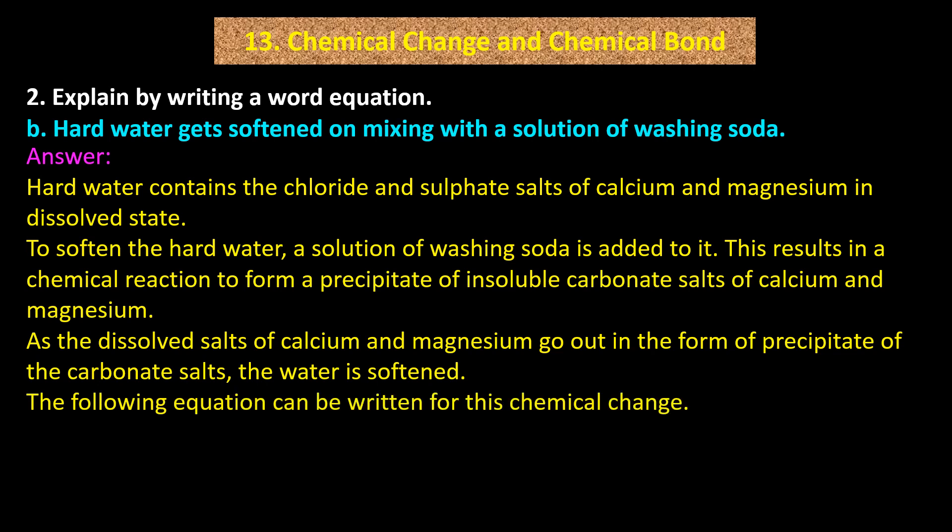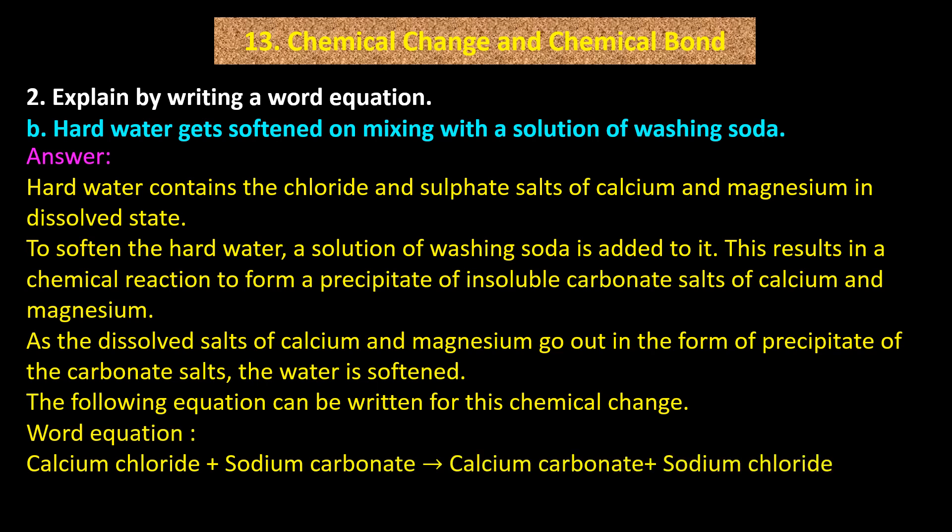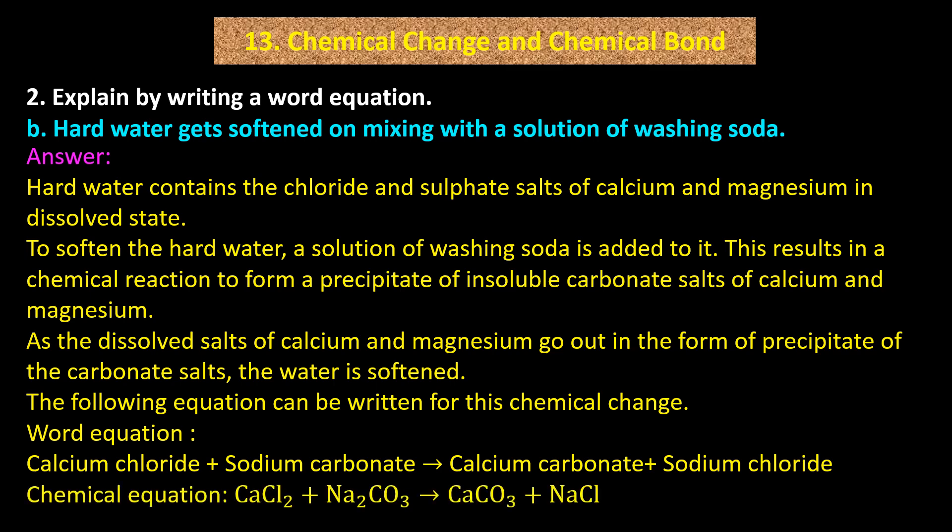As the dissolved salts of calcium and magnesium go out in the form of precipitate of the carbonate salts, the water is softened. Word equation: calcium chloride + sodium carbonate → calcium carbonate + sodium chloride. Chemical equation: CaCl2 + Na2CO3 → CaCO3 + NaCl.